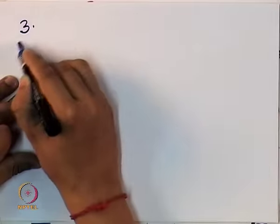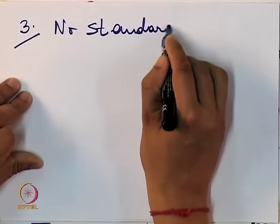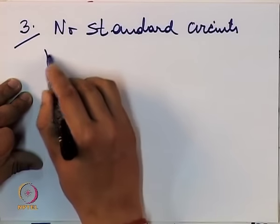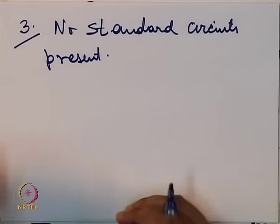Third, unlike digital circuits where there is a lot of reuse — for example a full adder circuit designed once can be reused many times — in the analog domain no standard circuits are present. Each component has to be designed individually, which makes it very laborious. In the digital domain there is a lot of reuse and you can build one module, reuse it again and again, and build up a big system. Even though a digital system might look big it actually contains many identical parts; analog circuits cannot be so easily reused.